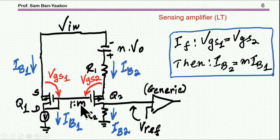And the meaning of the scaling is that if VGS1 is equal to VGS2, then the current here, IB2, will be M times the current of IB1.